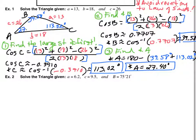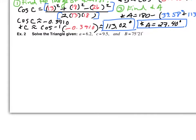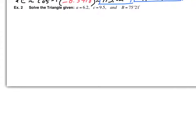Not so bad, right? Your calculator does a lot of the work for you. Just like Law of Sines, we're using the inverse — or arc — function. Alright, so let's look at what happens if they give you two sides and an angle. Example two.